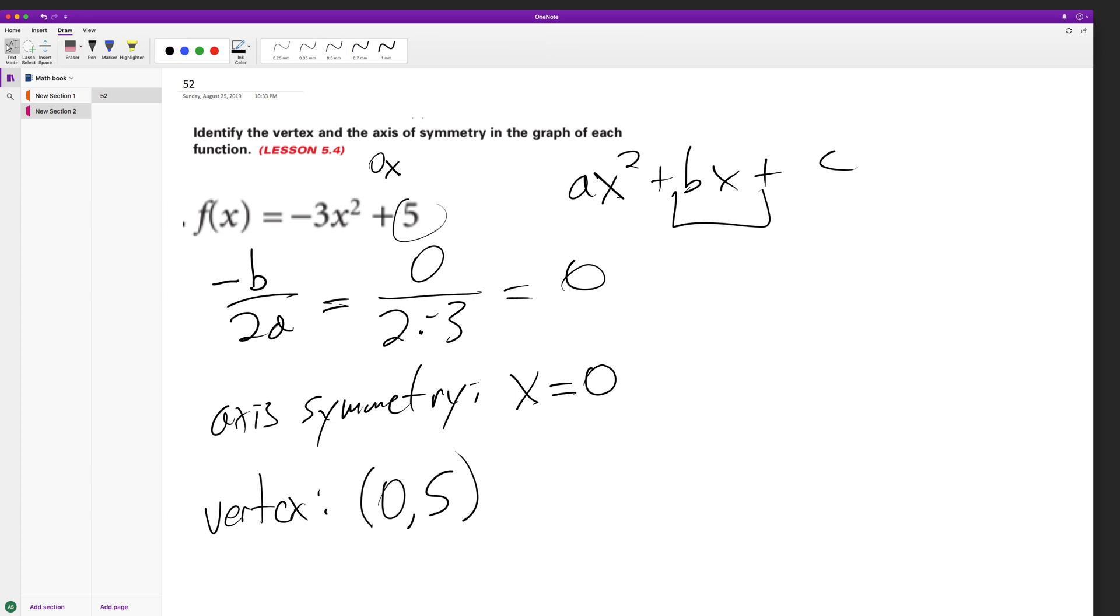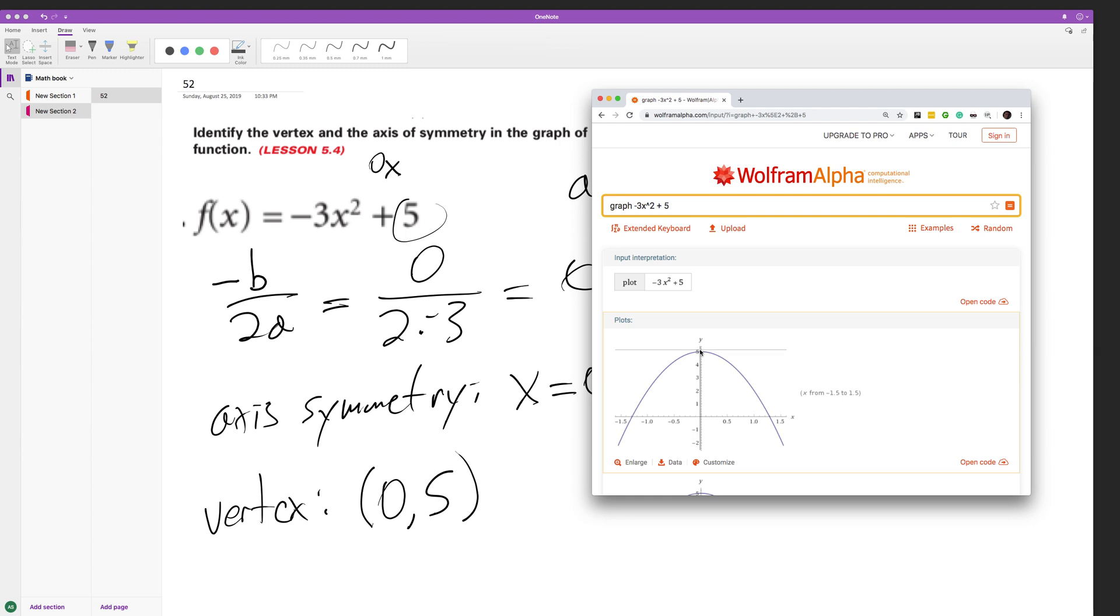And I went ahead and I had a graph here. And this is what it looks like as a graph. So there's our axis of symmetry, and our vertex is at 0, 5. And that's it. I hope that helped you out. Thanks for watching. Have a great day.